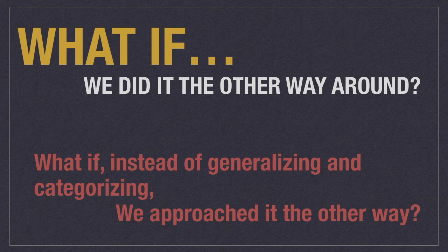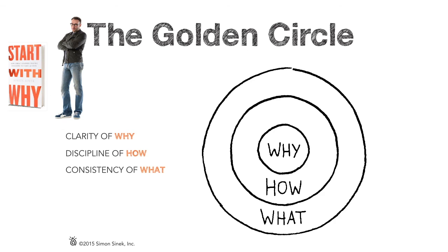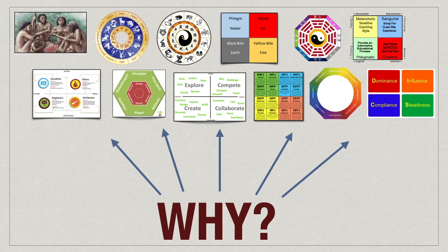But what if we did it the other way around? What if instead of generalizing and categorizing people, we approached it from a different direction? For this I'll turn to Simon Sinek's Golden Circle. In his TED talk, Sinek says what makes individuals and organizations powerful is that they understand their why. Most organizations know their what, few know their how, and very few know their why — why are they melancholy, why are they phlegmatic, why are they a socializer or a killer? That's what we're looking at: why do people behave in the way they're categorized?